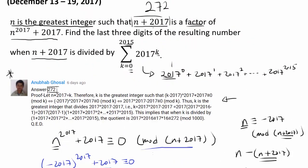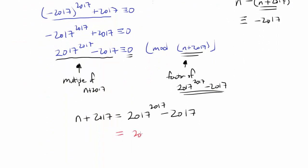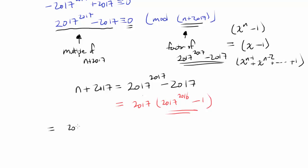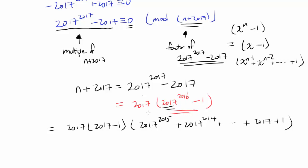So we have n plus 2017 — we can find n, but that's not really necessary because we just want to divide n plus 2017 by the summation. We know n plus 2017 equals 2017 times (2017 to the 2016 power minus 1). We can factor this because x to the n minus 1 equals (x minus 1) times (x to the n minus 1 plus x to the n minus 2, all the way to plus 1). So we have 2017 times (2017 minus 1) times (2017 to the 2015 plus 2017 to the 2014, all the way to plus 2017 plus 1).